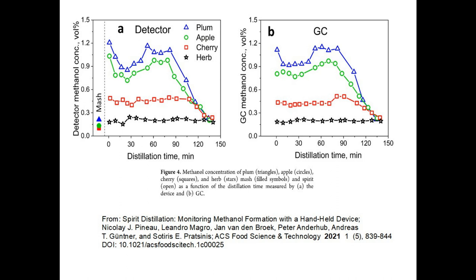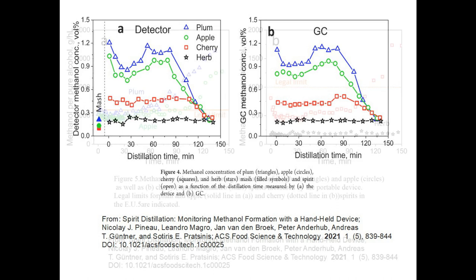The plum and apple cases show an initially high methanol, then a fall, a rise, and a longer fall. These graphs show methanol concentration in the distillate as the run progresses, but ethanol concentration falls during that time. What's more relevant is the ratio between methanol and ethanol.